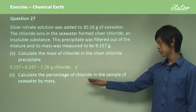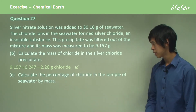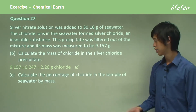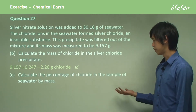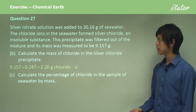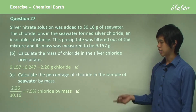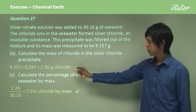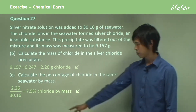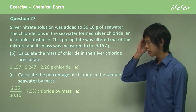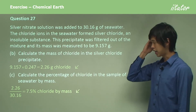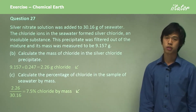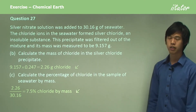Calculate the percentage of chloride in the sample of seawater by mass. All we have to do is take the amount of chloride — 2.26 grams — divide by 30.16, which is the mass of the seawater, and then multiply by 100. That gives you 7.5% chloride by mass.